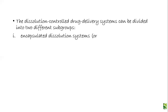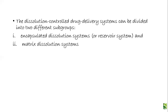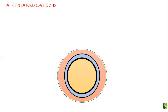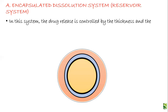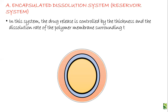The dissolution controlled drug delivery systems are divided into two subgroups: the encapsulated dissolution system or reservoir system, and the matrix dissolution system or monolithic system. In the encapsulated dissolution system, drug release is controlled by the thickness and dissolution rate of the polymer membrane. The dissolution property of the polymeric membrane is important, not that of the drug. We prepare drug reservoirs encapsulated in polymeric membranes of different thickness, and by this difference in thickness we can control the rate of dissolution of the drug from the polymer membrane surrounding the drug core.